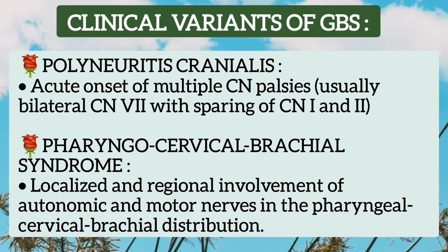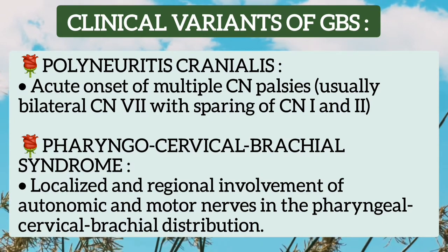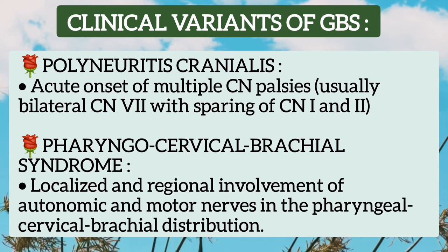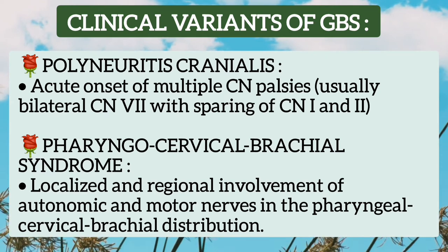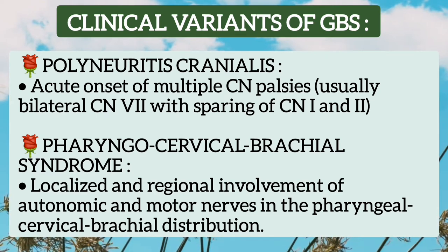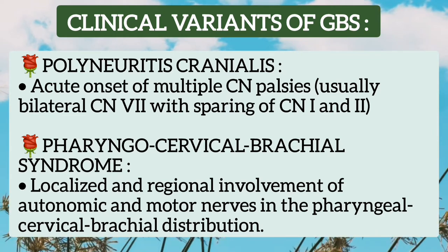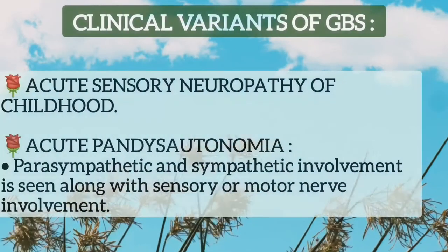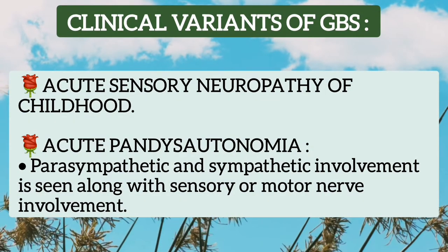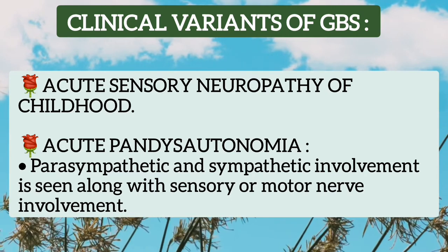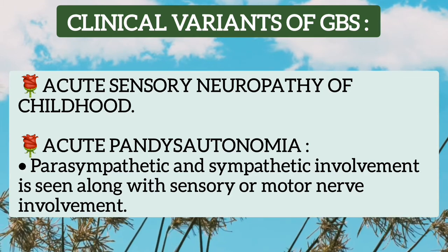There are also rare clinical variants of GBS. These include polyneuritis cranialis, in which there is acute onset of multiple cranial nerve palsies. The second is the pharyngeal-cervical-brachial syndrome, in which there is localized and regional involvement of autonomic and motor nerves in the pharyngeal-cervical-brachial distribution. Other rare variants include acute sensory neuropathy of childhood and acute pandysautonomia, in which parasympathetic and sympathetic involvement is present along with sensory and motor nerves.